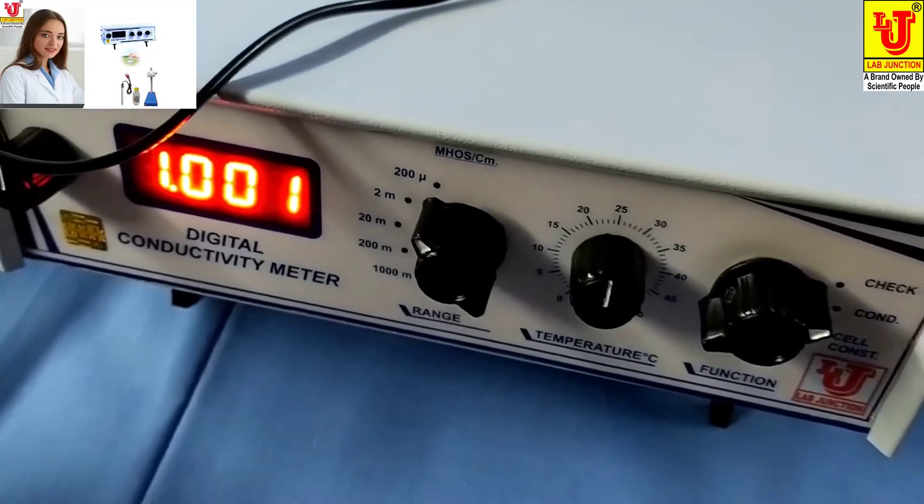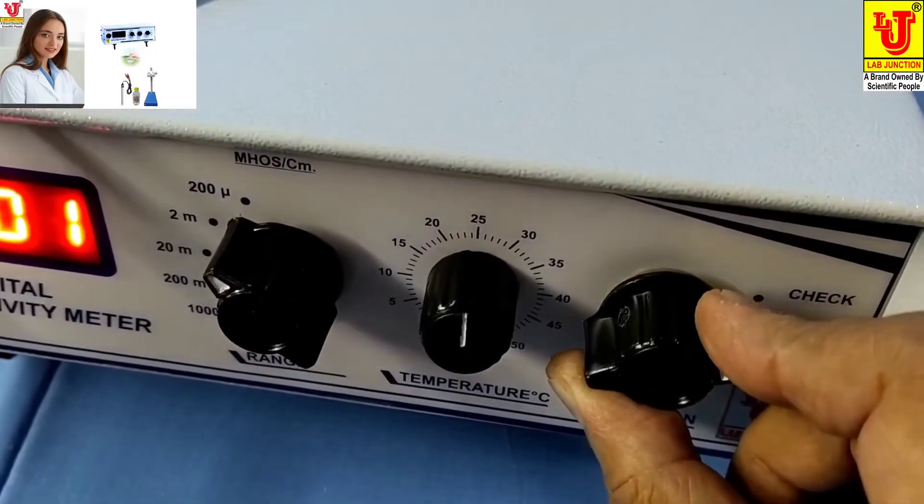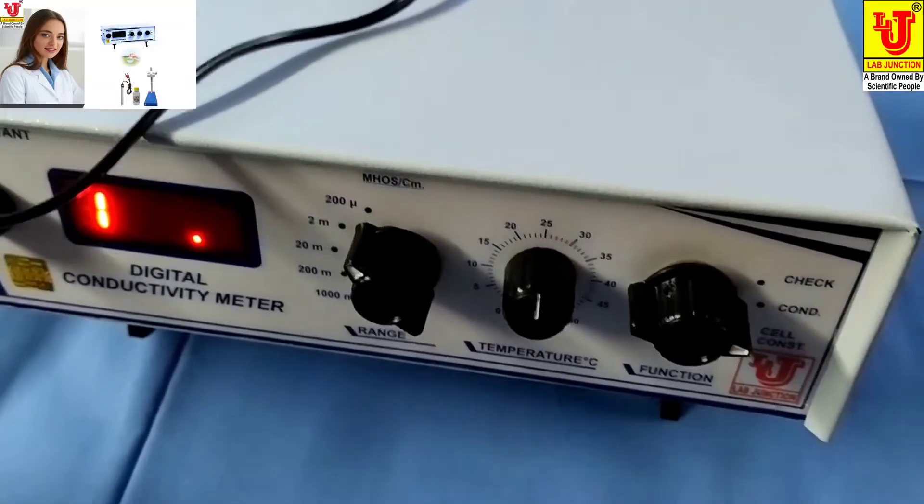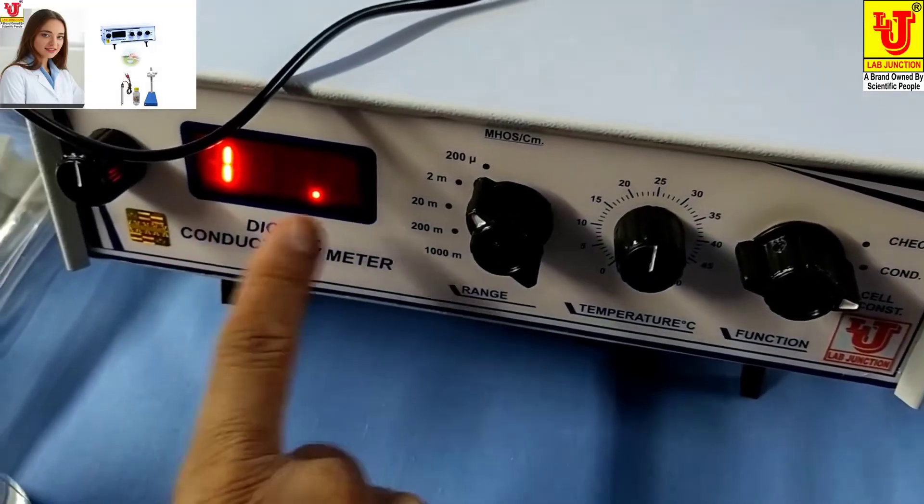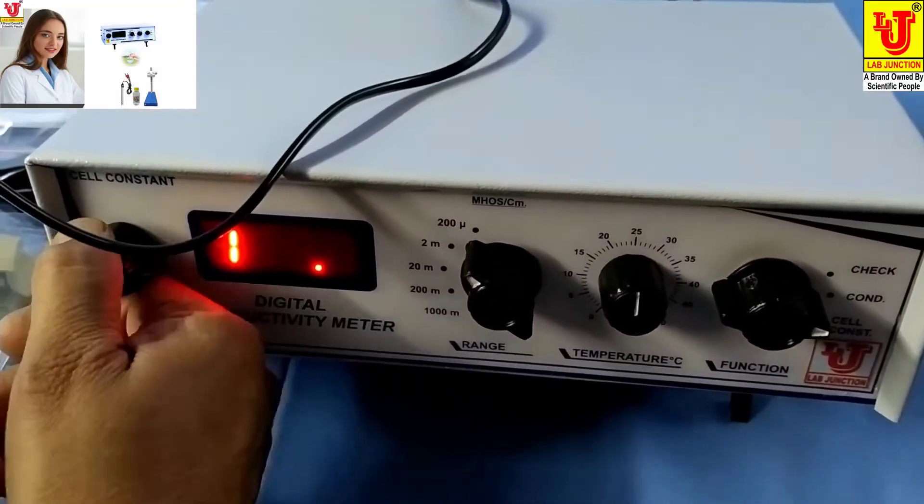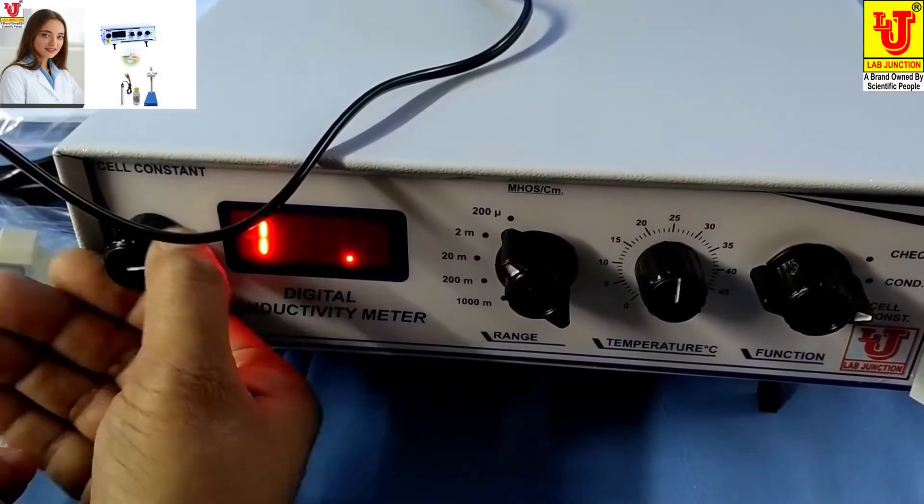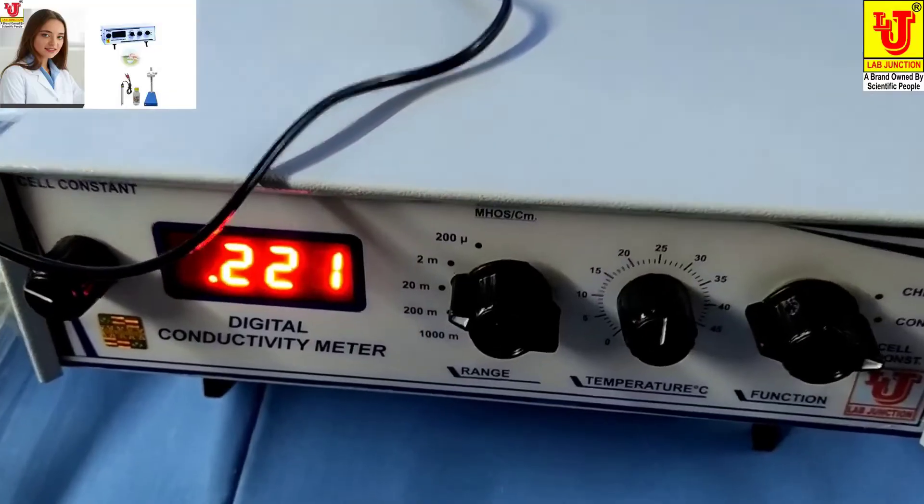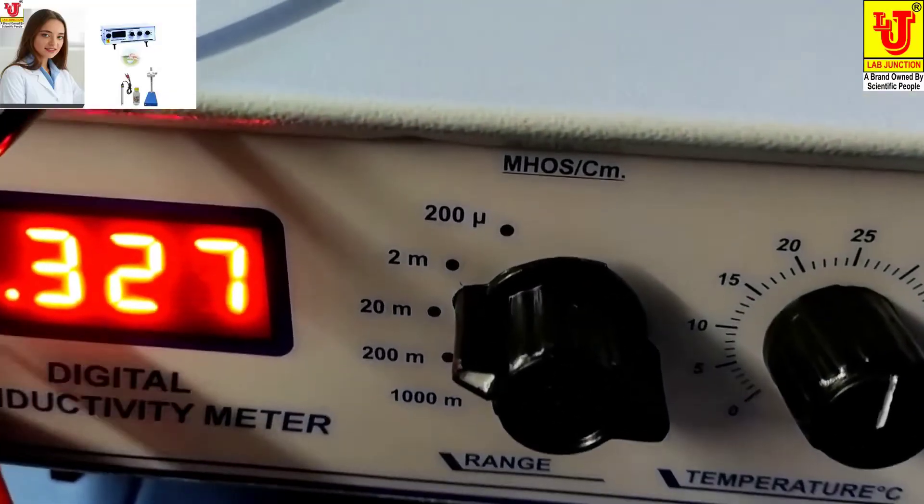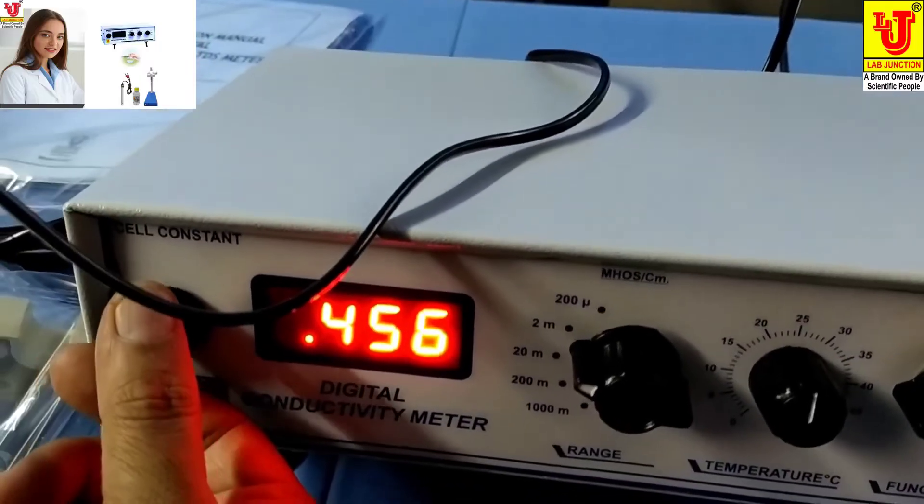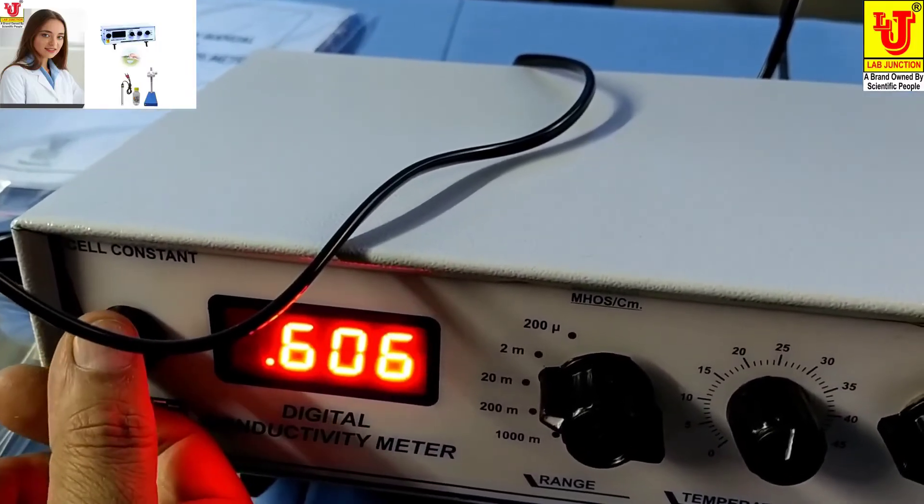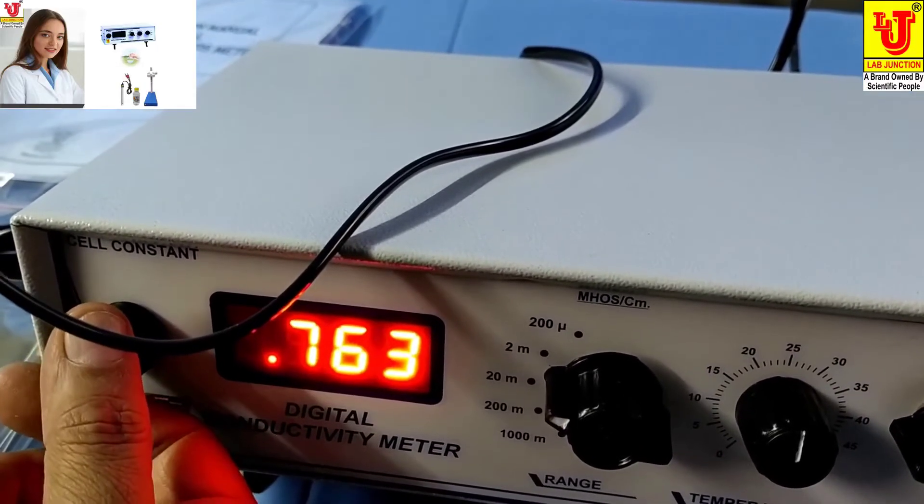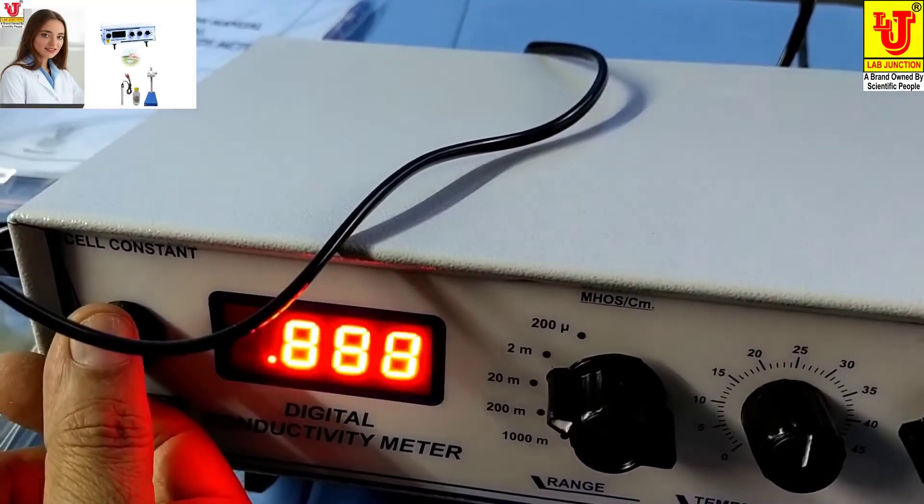Now first, you can set to conductivity position. Now this is our range on first position, like we checked again. Now you can do on second range and set it to your known standard solution value, 1 millisiemens.